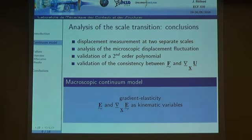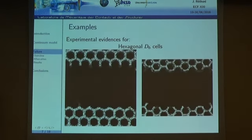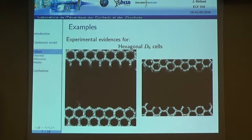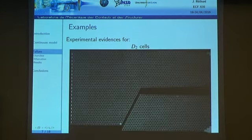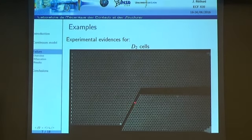We also developed a finite element model updating technique to identify the elastic properties of this kind of material. The next question is how failure develops in such material. We have experimental evidence that failure always occurs at the corners of the unit cell, whether for hexagonal cells or square cells.